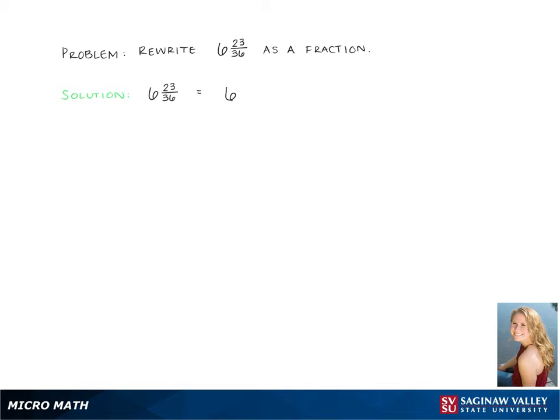we use a plus sign. So the first thing we're going to do is rewrite this as 6 and 23 over 36, which is 6 plus 23 over 36.